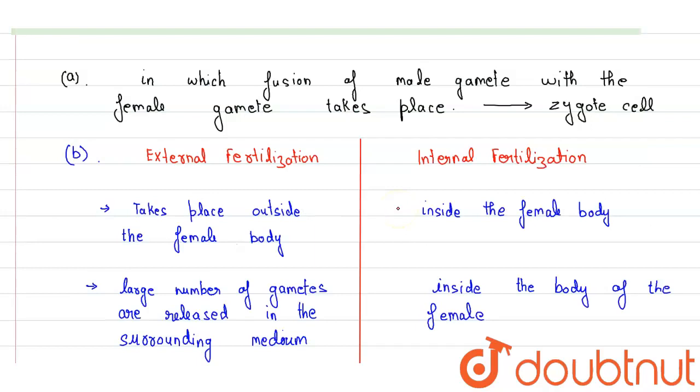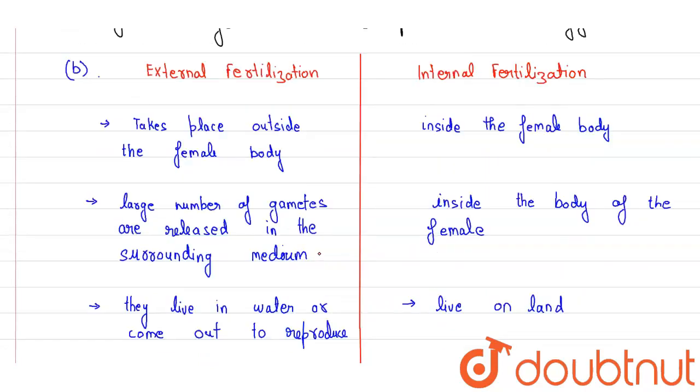External fertilization takes place outside the female body, and in internal fertilization it takes place inside the female body. In external, large number of gametes are released in surrounding medium. Surrounding medium may be water, for example. In internal fertilization, the gametes would be released inside the body of the female by copulatory organs.